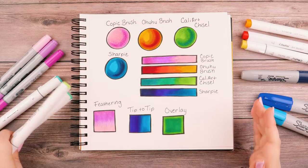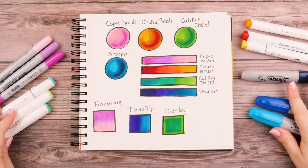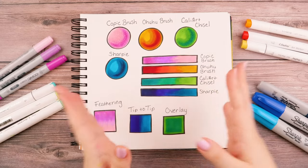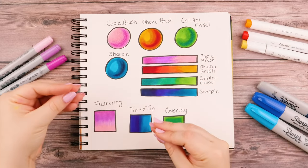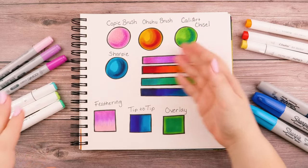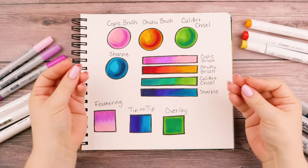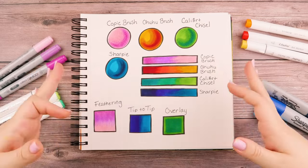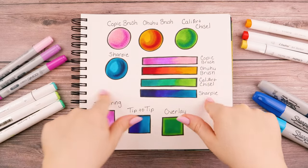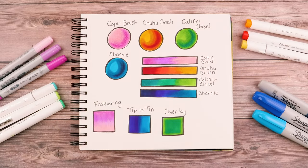So these are the techniques that I use to blend with my alcohol markers. I hope you found it helpful seeing all these different brands and how you can still achieve a blending effect, no matter what sort of marker you're using, whether it's a Copic brush or an Ohuhu or Caliart or Sharpie, you can still get blending results in the end. So make sure you thumbs up this video, leave a comment, and I will see you all next time. Thanks! Bye!